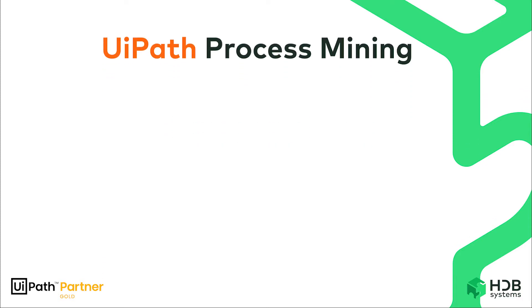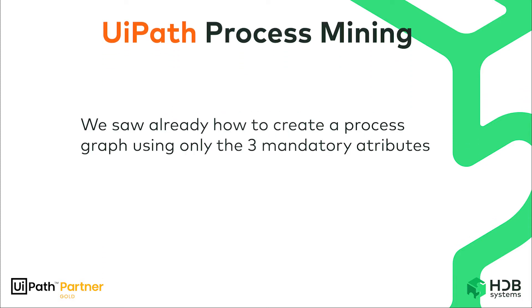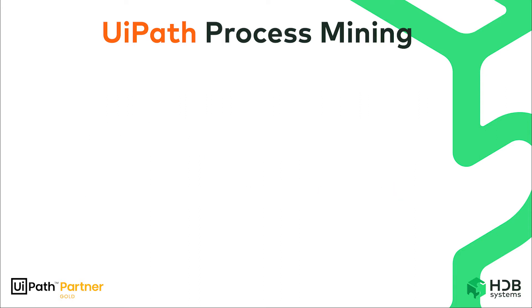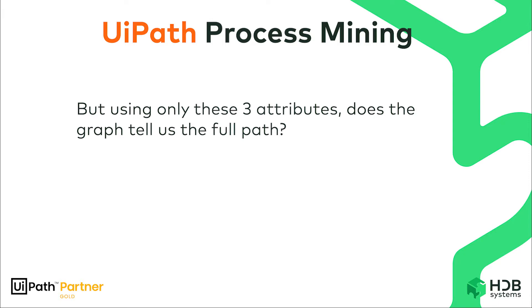In the last video, we saw how to create a process graph using only the three mandatory attributes obtained from the input data table. But using only these three attributes, does the chart tell us the full path? Let's check.